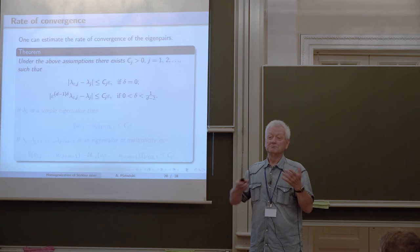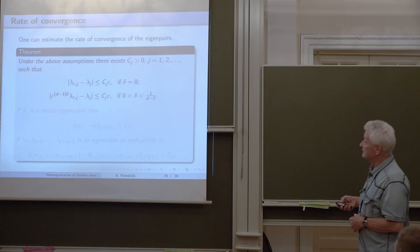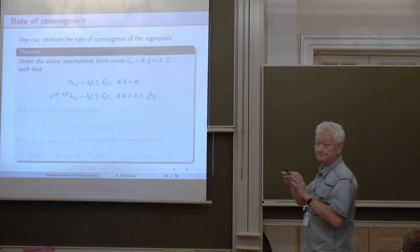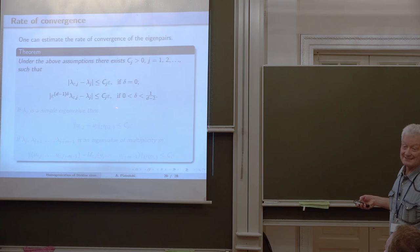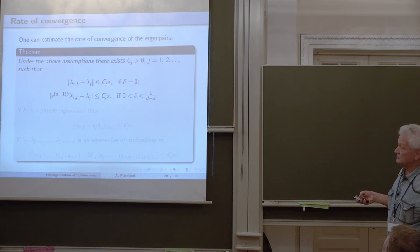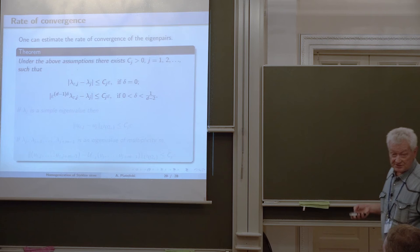One can ask about the rate of convergence. In our framework, by more accurate work with approximation using the Vishik-Lyusternik lemma, we can show that the rate of convergence is at least of order epsilon: the difference between lambda epsilon j and lambda j does not exceed a constant C j times epsilon, where C j may grow with j.